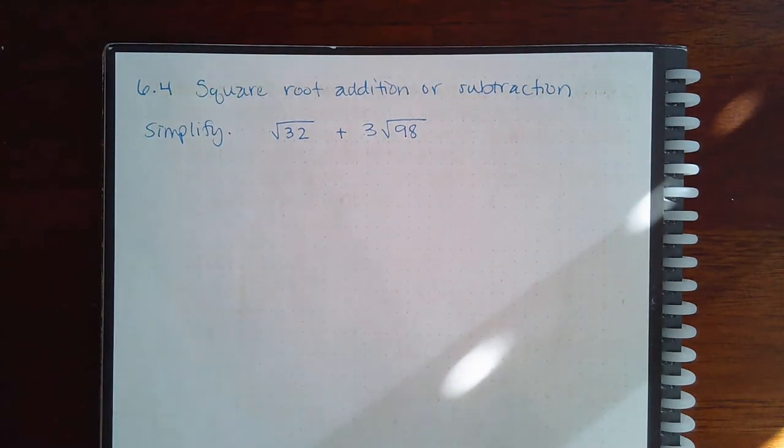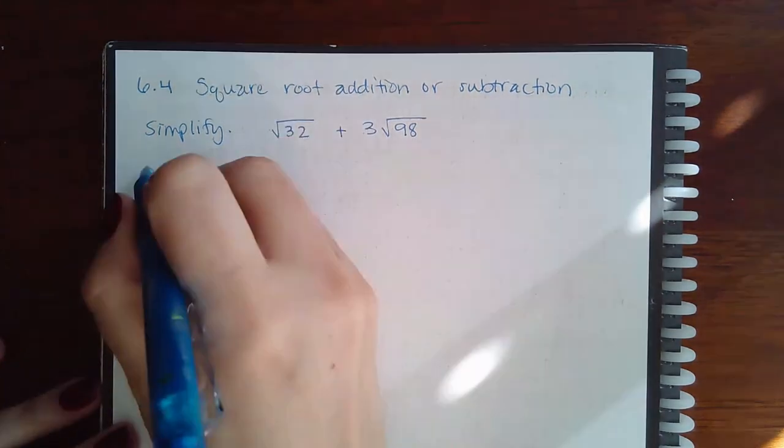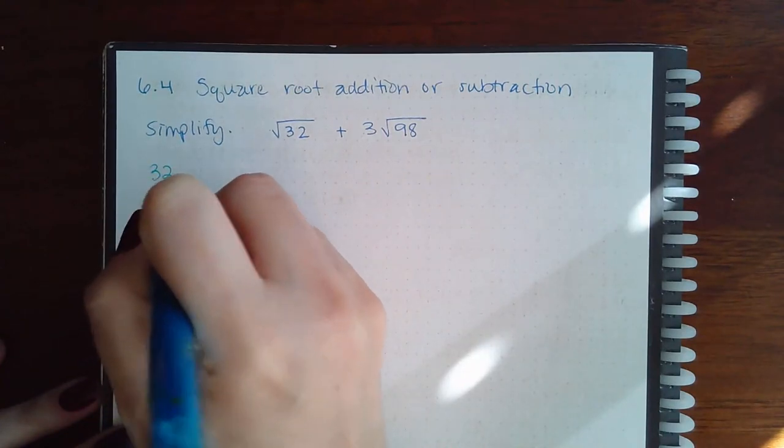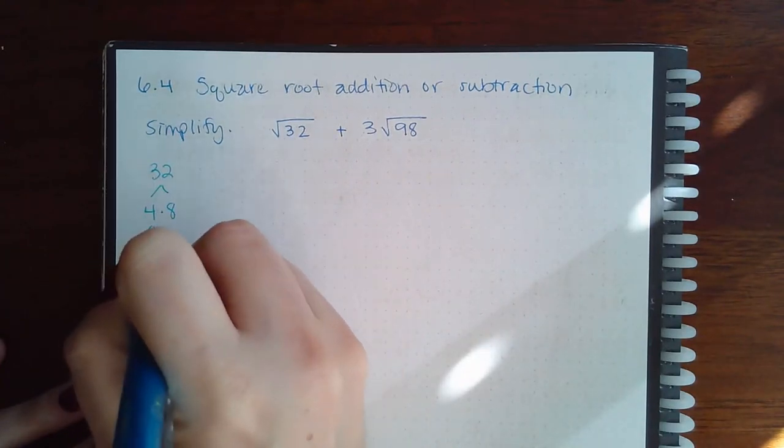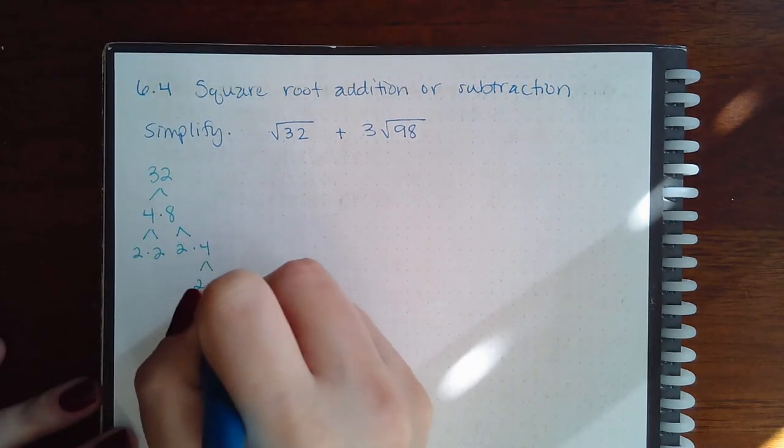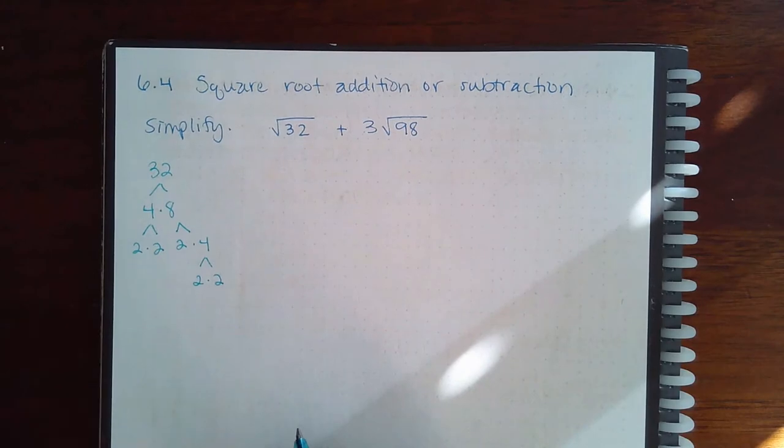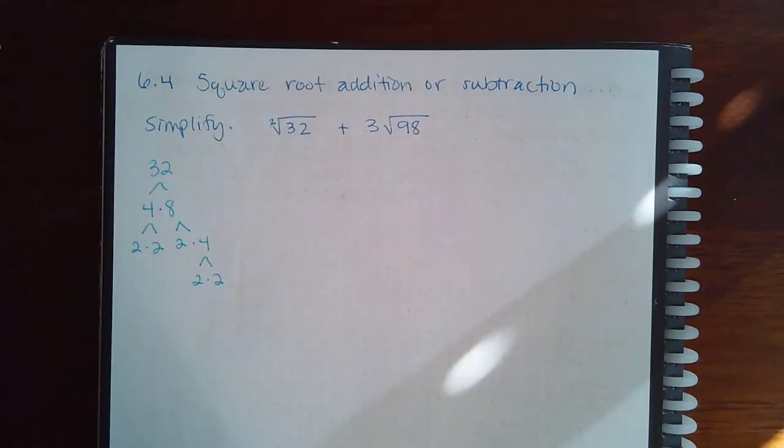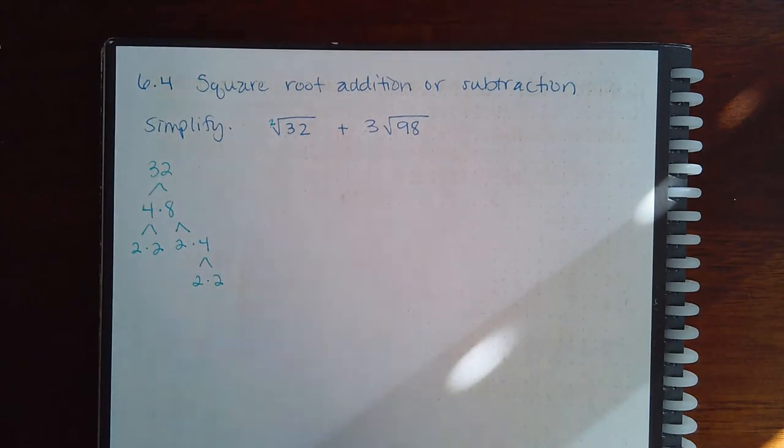So I'm going to take 32 off to the side. I know that that is four times eight, four is two times two, eight is two times four, and four is two times two. Now remember, you want to have pairs and then your leftovers.